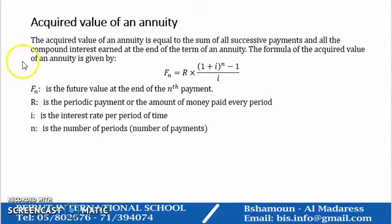In this case, we use the future value or the acquired value formula, which is Fn. Fn is the future value—you can use C, you can use F. Also here, R is the monthly payment or the payment per period. You can also use A for annuity, times (1 + i). i is the interest rate per period of time.